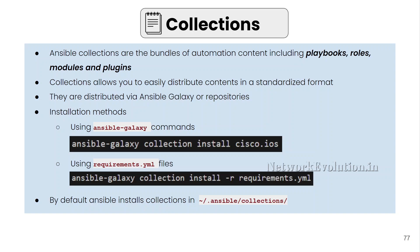By default, Ansible installs collections in the home/.ansible/collections directory. We will create a separate virtual environment with only the ansible-core package and try to install the Cisco IOS collection manually.